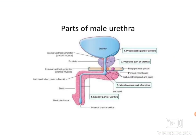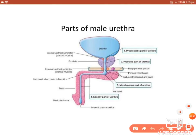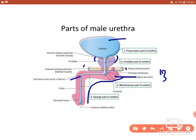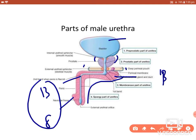Here again is the sagittal view of the bladder and urethra. You can see the prostate, the deep perineal pouch, the penis with its bulb forming the fixed part, and the body and glans forming the free part. The urethra is shown in blue — here is the internal urethral orifice and here is the external urethral orifice or meatus.